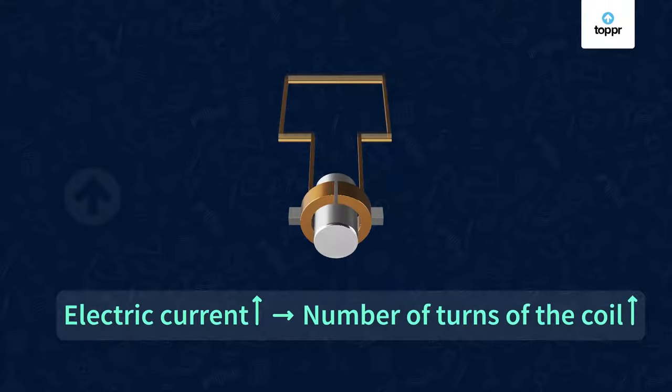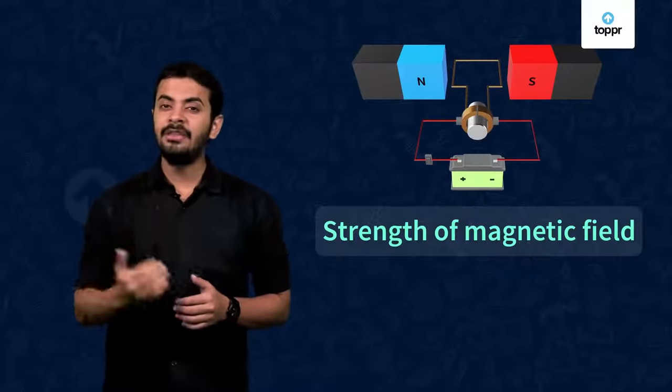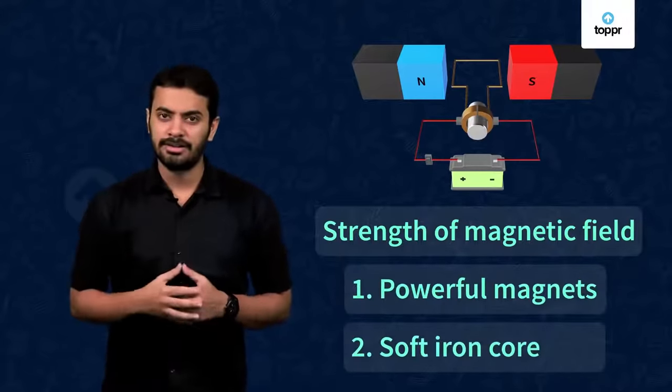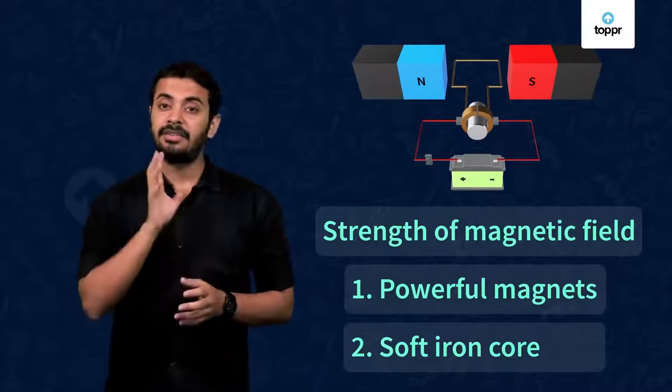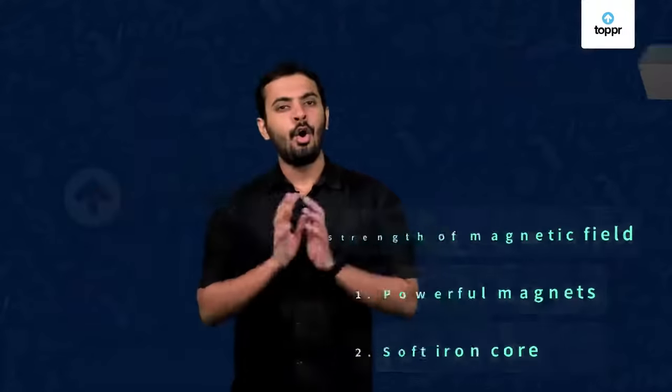We have already seen that if the number of loops are more, a greater force will be experienced. And to increase the strength of the magnetic field, we can either use more powerful magnets or use a soft iron core. Because we know that the presence of the soft iron increases the strength of the magnetic field. All these factors increase the force on the coil and hence the number of rotations.